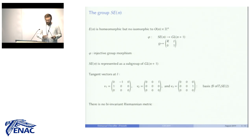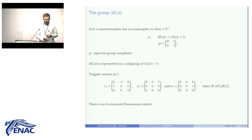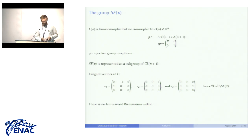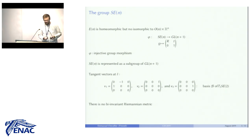Looking at planar rigid motions, it is a three-dimensional Lie group with one dimension corresponding to rotations and two dimensions corresponding to translations. We set a reference basis of the tangent space at identity, with the first vector in the direction of pure rotation and the two others in the direction of pure translation. One important point is that there is no bi-invariant metric on this group, so we cannot use the Riemannian framework to do statistics.